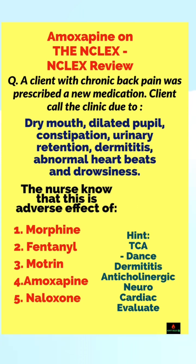Morphine and fentanyl are all downers — you can't pick morphine and leave fentanyl alone. Naloxone is used to take care of them. Therefore, options one, two, and five are eliminated. Motrin does not do that. Amoxapine is the problem.